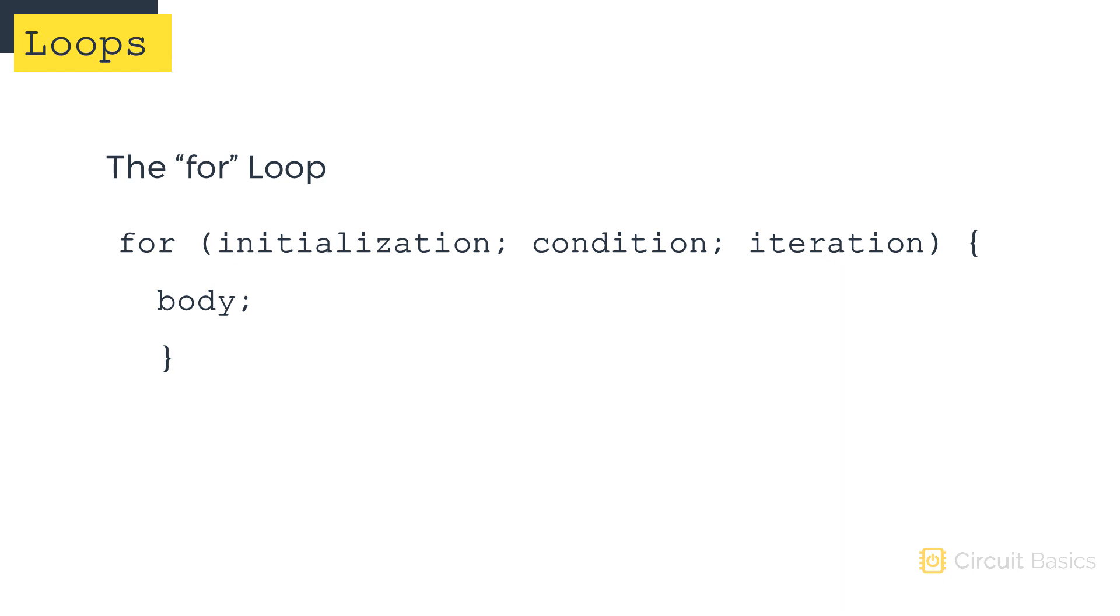Instead of just evaluating a condition for true or false, a for loop evaluates a set of three parameters. The parameters are the initialization value, the condition, and the iteration.